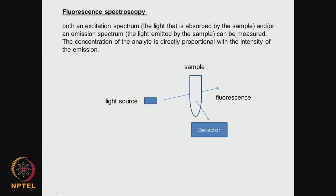At different concentrations you will get different intensities. We can draw a standard graph and later calculate the concentration of the analyte from the intensity of the light. This is useful if I want to monitor a metabolite and so on.